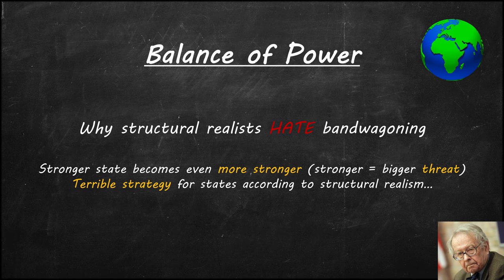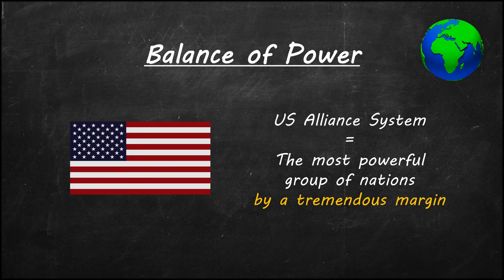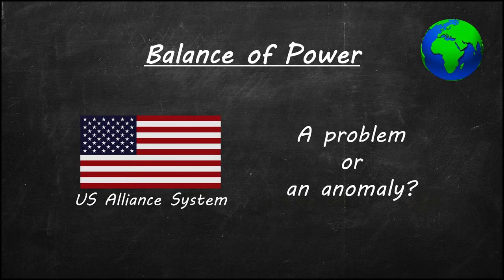In a world where states only look at state capabilities, bandwagoning seems like a really bad strategy. But the U.S. alliance system seems to be the example of bandwagoning. The U.S. alliance system is, without comparison, the most powerful grouping of nations in the world. Is structural realism wrong? Or is the U.S. alliance system just an anomaly in world history? This is what Stephen M. Walt tried to resolve.